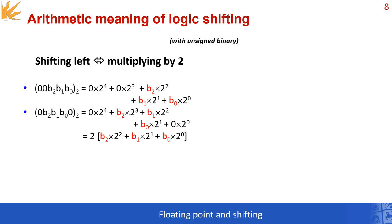Think about how easy it is to do multiplication this way. If you shift two positions to the left, that would imply multiplying by four. And if you shift a number three positions to the left, that would be like multiplying by two to the power of three, or multiplying by eight.